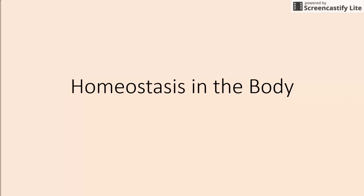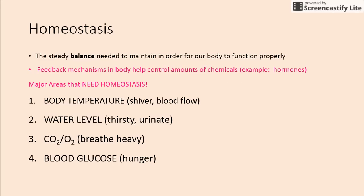This is the crash course for homeostasis in the body. Homeostasis is the steady balance needed to maintain in order for our body to function properly. We have different things called feedback mechanisms in our body to help control the amounts of chemicals that are released or going around in our body. An example would be hormones.